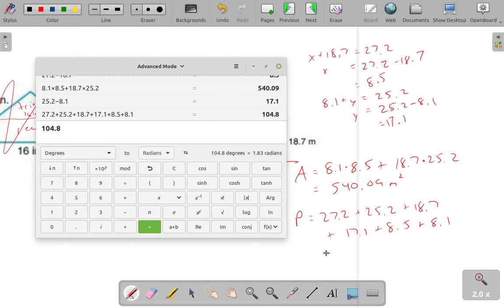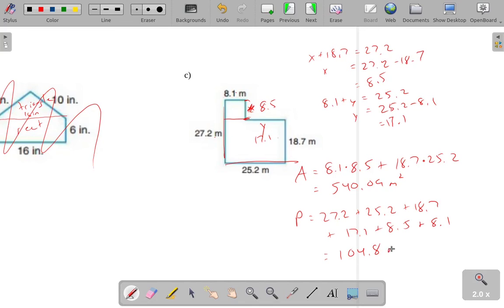So, in any case, the total length here is 104.8. And the units here would be in meters. This is a perimeter, so it's a distance, so it's just meters.